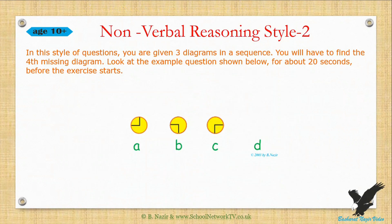Nonverbal Reasoning Style 2. In this style of questions, you are given three diagrams in a sequence. You will have to find the fourth missing diagram. Look at the example question shown below for about 20 seconds before the exercise starts.